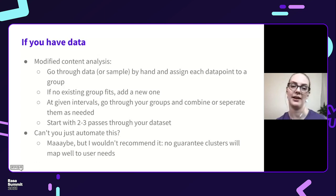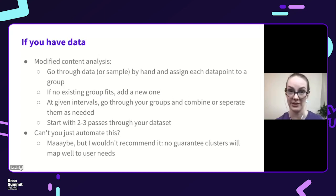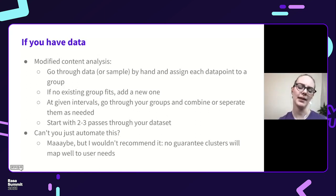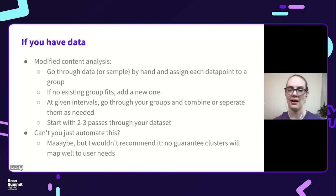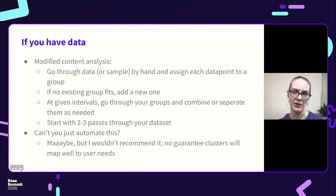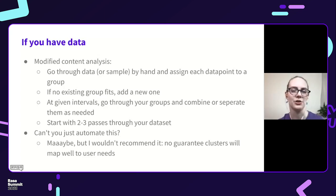So if you have user data, how do you know what your intents are? I would recommend using a modified content analysis for your first pass. Content analysis is a qualitative research technique used in a lot of corpus studies. The way it works: go through your data or a sample, and for each utterance or turn, assign it to an intent category. If there isn't one that fits yet, add a new one. At given intervals — maybe every hour, or when you've looked at 100 data points — go through, re-evaluate your groups, combine them, separate them. Go through your dataset two or three times so you have stable groups you can consistently agree on which intent something belongs to.